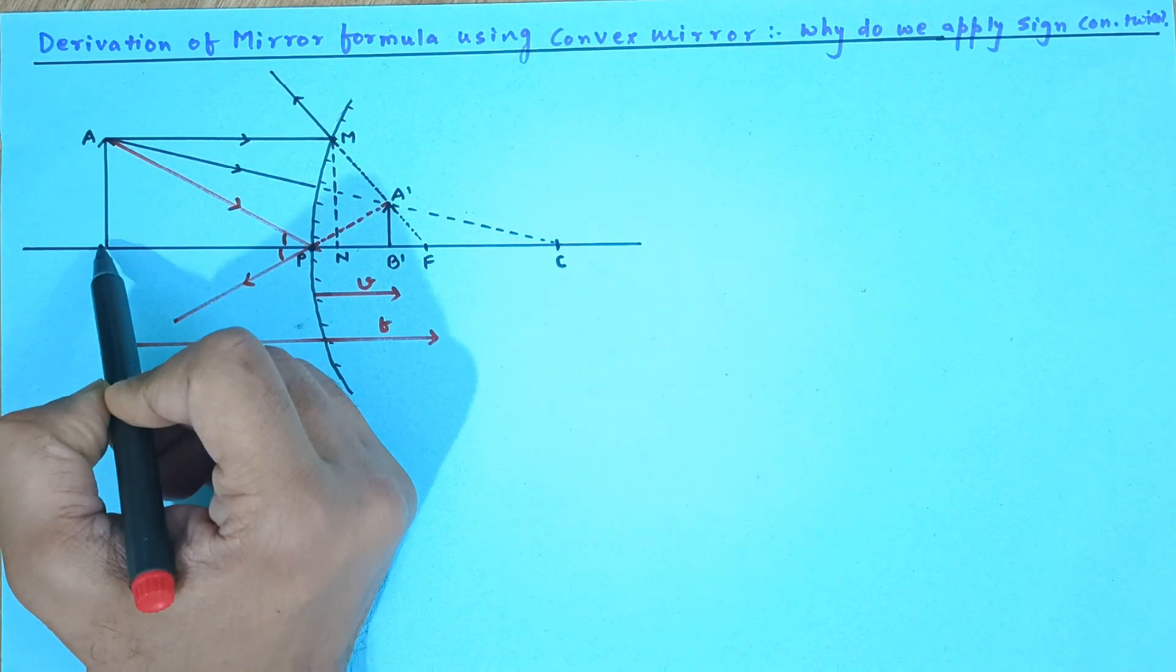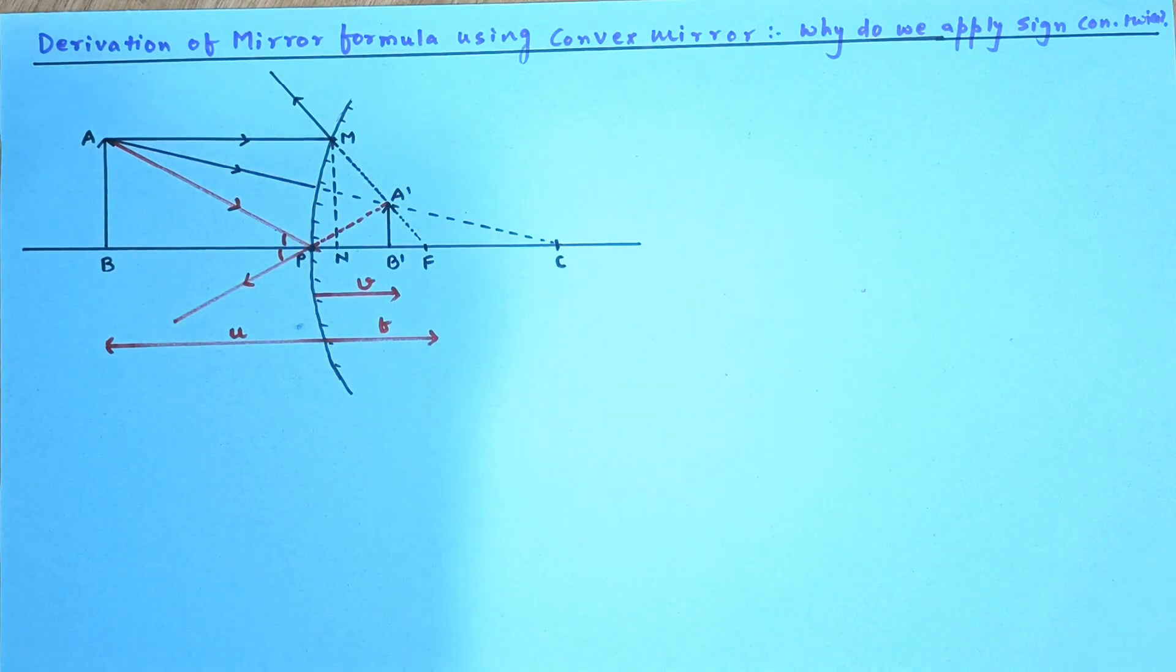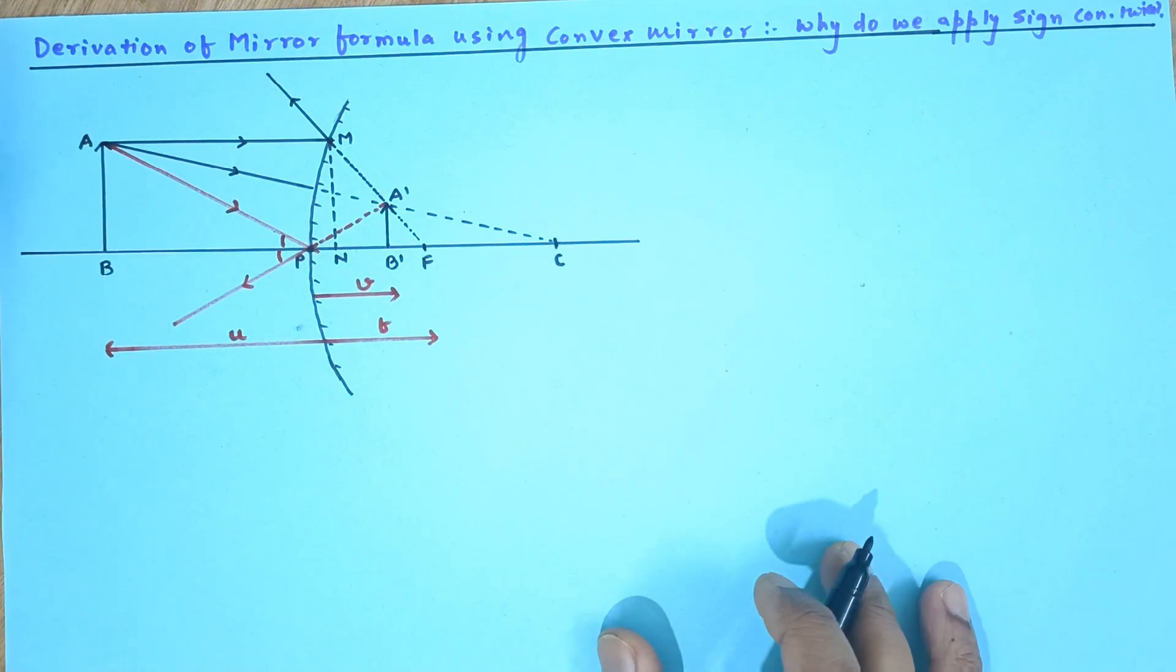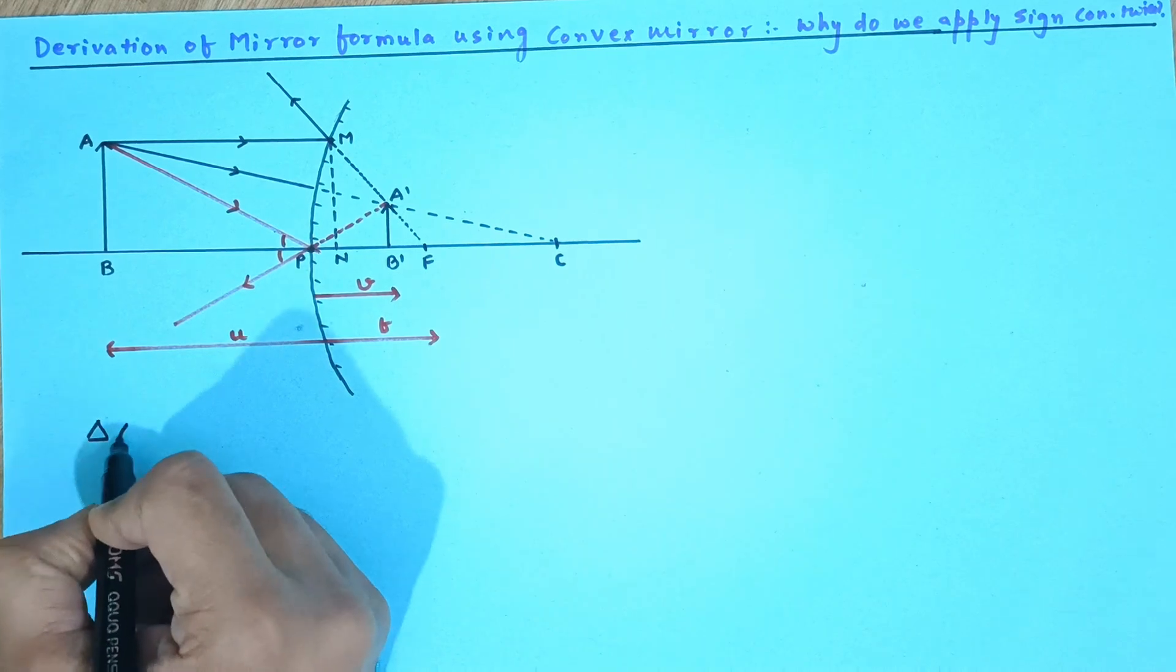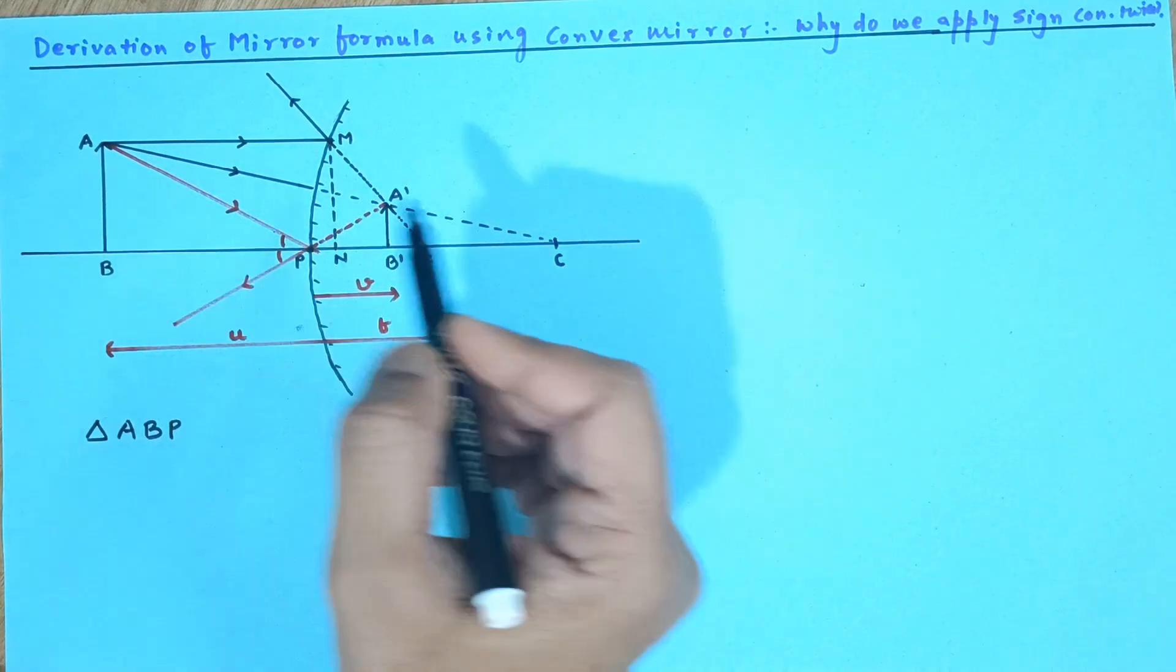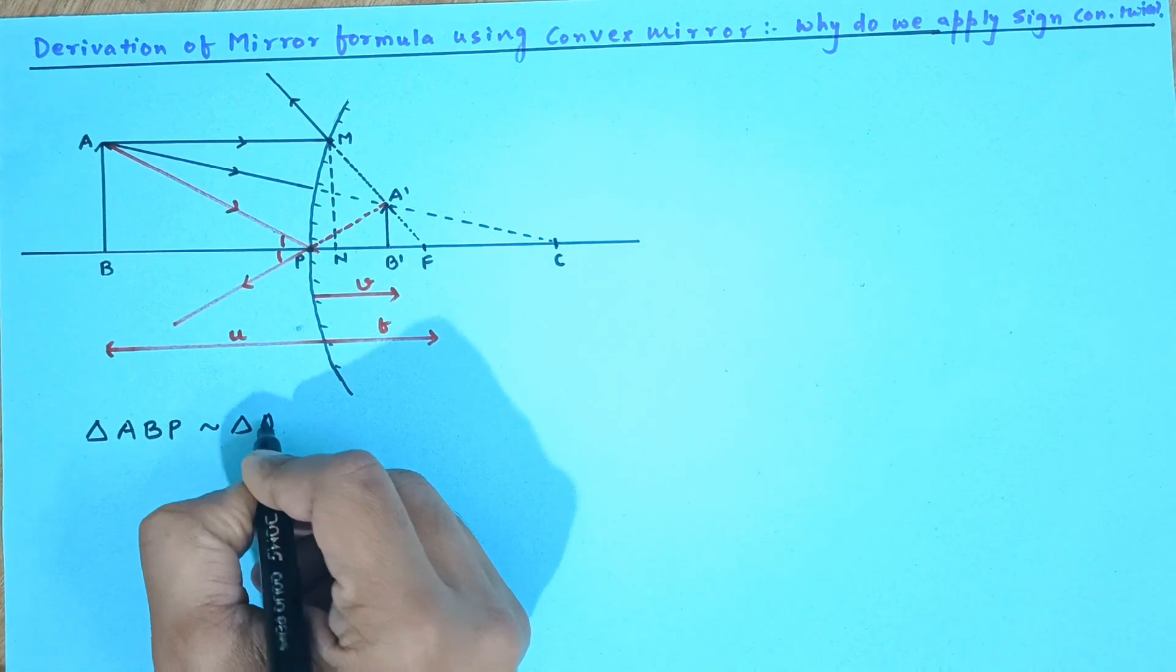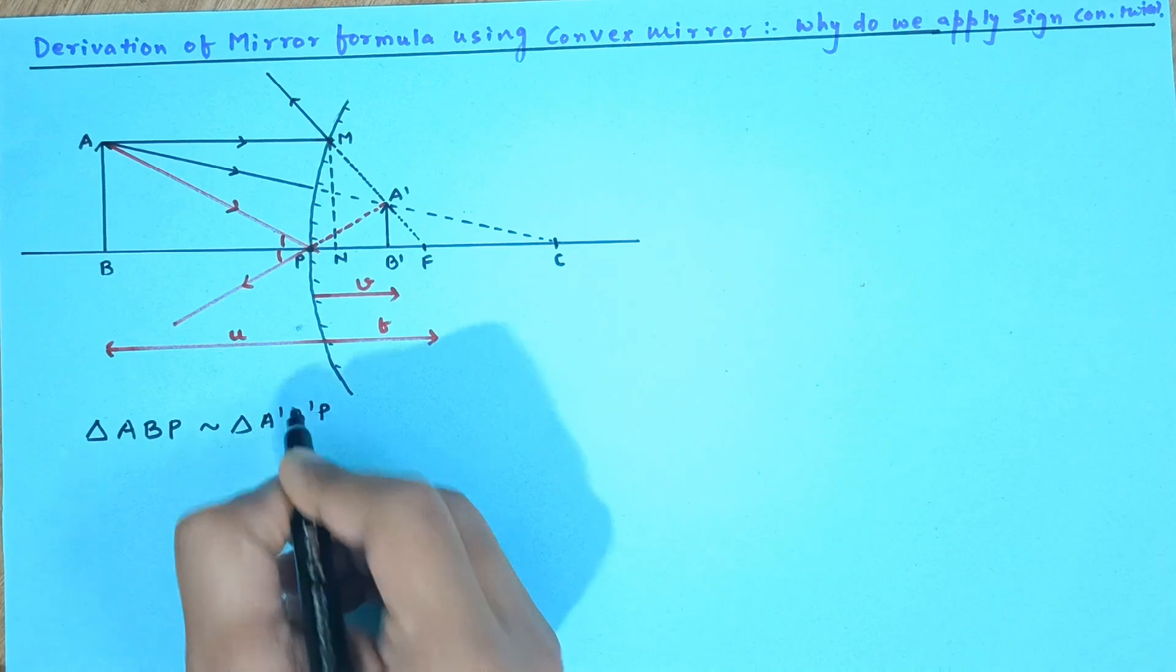Now, you can consider this triangle that is ABP, let me write it down. So we are going to consider triangle ABP, this triangle and A'B'P. So these two triangles are similar A'B'P.